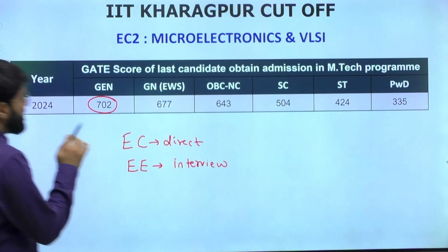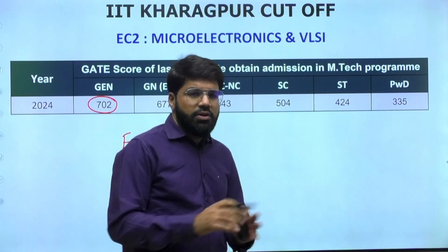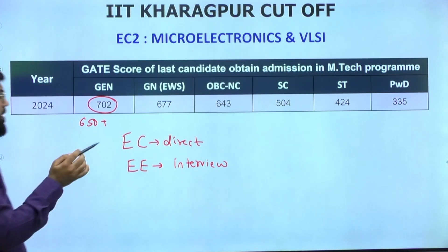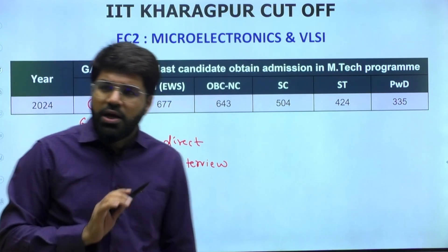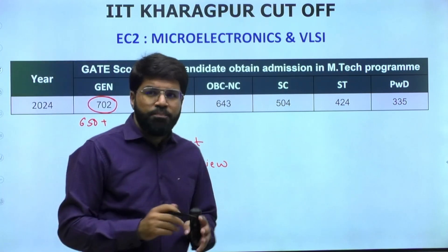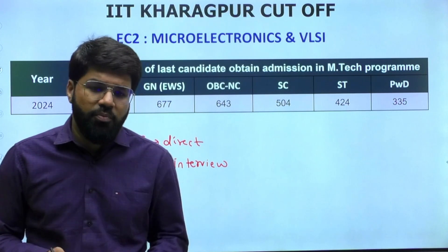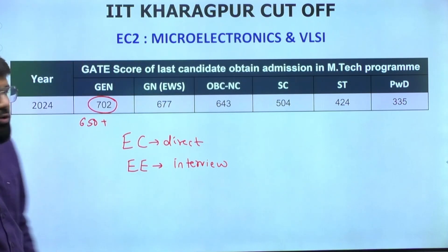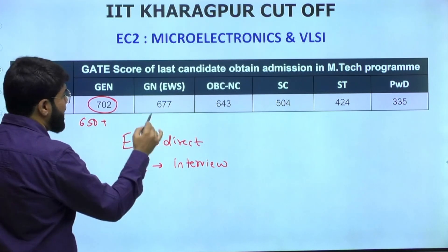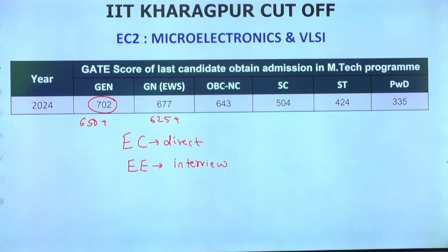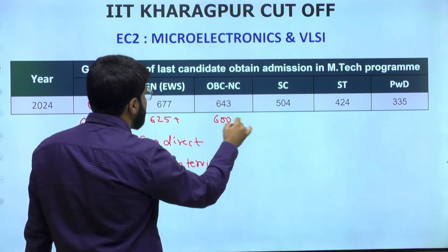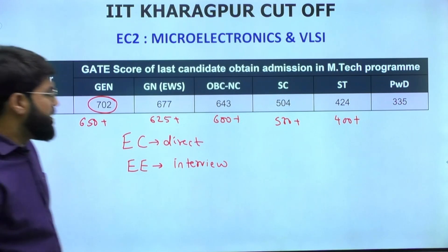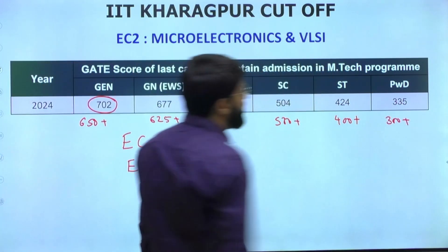This data is from the previous year and is indicative. As far as IIT Kharagpur is concerned, if you have a GATE score of 650 plus, do take a call and fill it up. Although there is no interview for EC courses - it's direct - if you really want VLSI only and have 650 plus, you can try, because at that score you may not be getting VLSI directly at Bombay or IISc Bangalore. IIT Kharagpur VLSI is a very well-known department with very good placements. Safe scores: General - 650+, EWS - 625+, OBC Non-Creamy Layer - 600+, SC - 500+, ST - 400+, PWD - 300+.